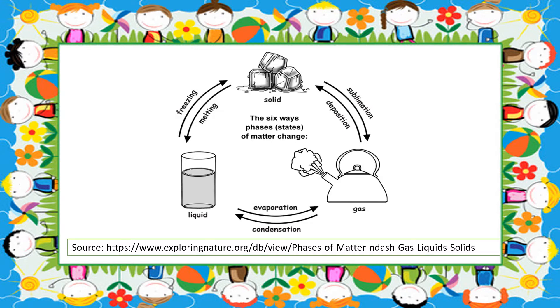This diagram shows the different phase changes. These are freezing, melting, sublimation, deposition, evaporation, and condensation.